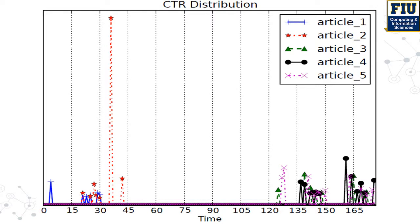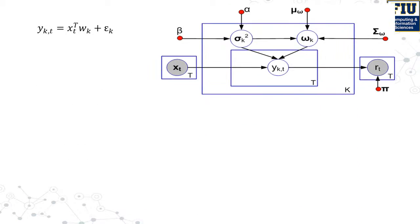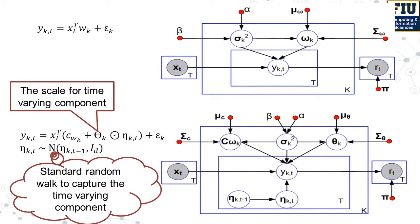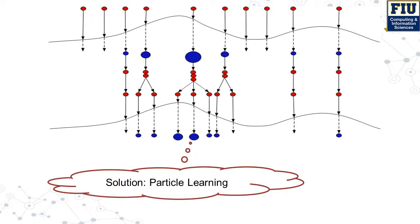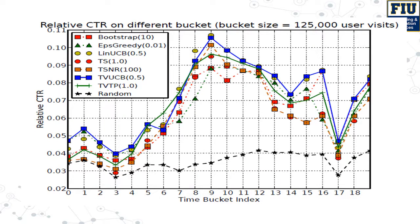We arbitrarily chose five articles from the Yahoo public dataset under the same context. This shows that the reward — that is, the CTR — is dynamically changed over time. We propose a time-varying model to address this issue, using particle learning to infer this model. The empirical study shows the effectiveness of our method.